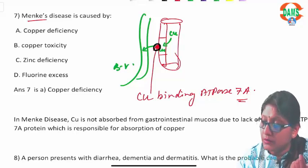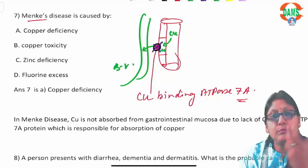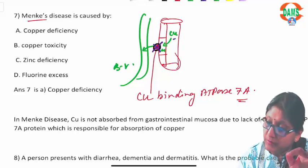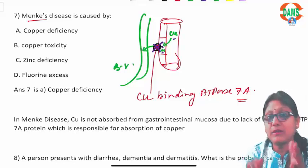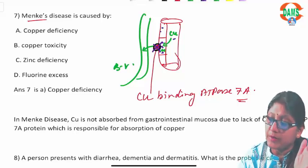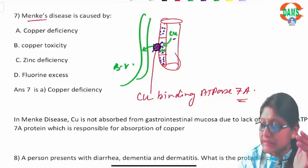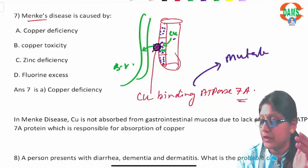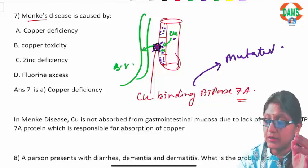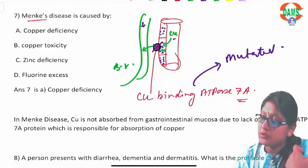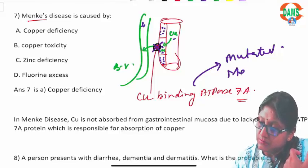In Menke's disease, copper-binding ATPase 7A is mutated. Copper is absorbed into the mucosa but cannot enter the blood vessels, causing copper deposition in the GIT mucosa. The result is lack of copper in circulation, which is Menke's disease.